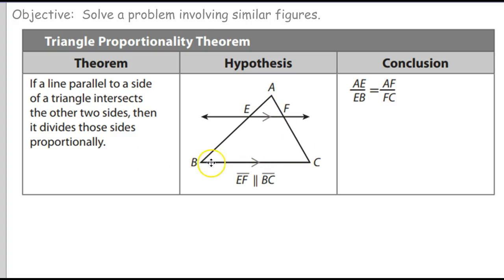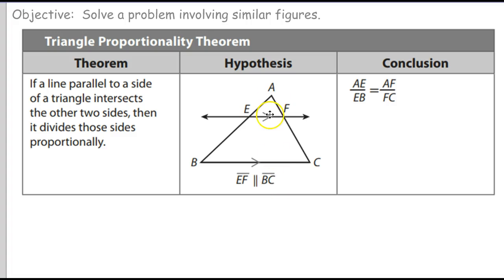Here's the triangle, triangle ABC. We have side BC, and then shown above that is line EF, which is marked as parallel to BC. And it tells us EF is parallel to BC. So that means the proportion from EA to EB is the same proportion as AF is to FC.